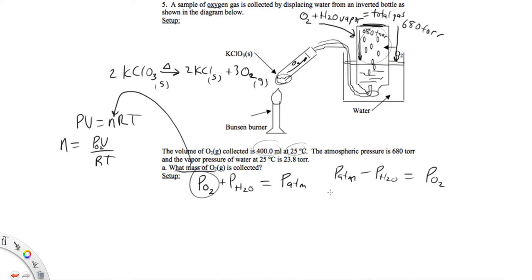All right, so it tells us that the atmosphere is 680 torr. The water vapor pressure depends on the temperature, so the hotter this is the more the water evaporates, which is intuitive. So that's 23.8 torr, that's not measured, we look that up on the table. So the pressure of O2 turns out to be 656 torr.